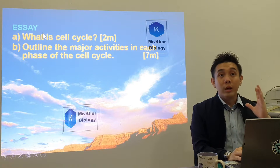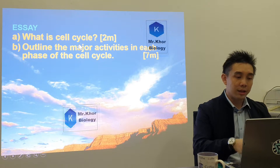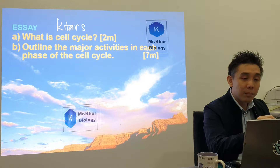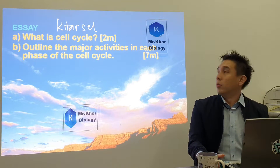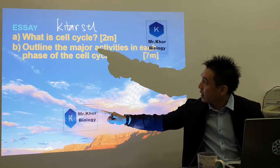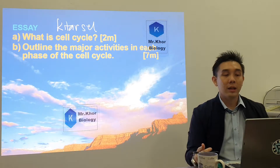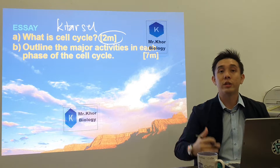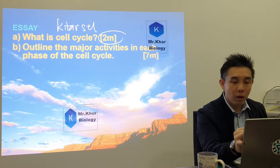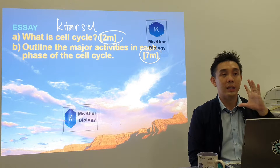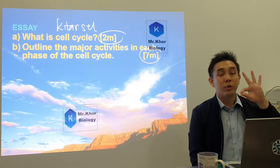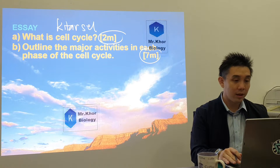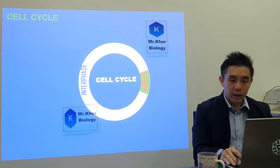Straight to the point — cell cycle, or in Bahasa Malaysia, 'kitar sel'. Can you explain the activities involved in the cell cycle? Can you give me the two points for the definition of cell cycle, and all six or seven points for the phases? There are three phases and you must know what happened in each of these three phases.